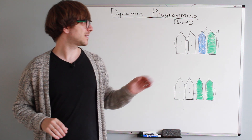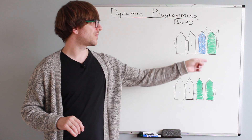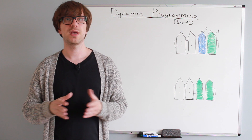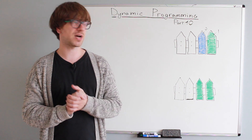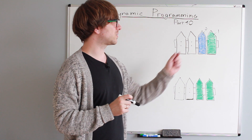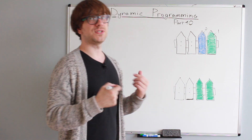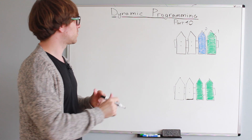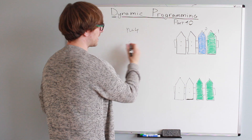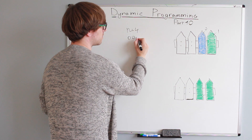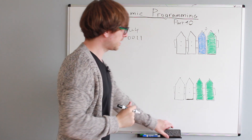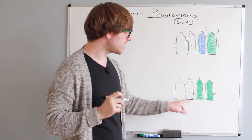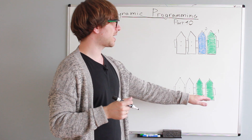The problem is that we've got a fence of size n — n posts and two colors, green and blue. You have to paint all the posts such that no more than two adjacent posts have the same color, and we have to return the total number of ways to paint the entire fence. Green is marked as one and blue as zero. For example, when n equals four, the fence could look like zero, zero, one, one — blue, blue, green, green. The constraint is we cannot have more than two posts of the same color: three greens or three blues is not allowed.